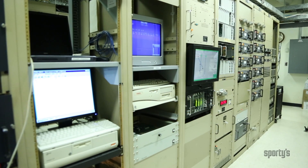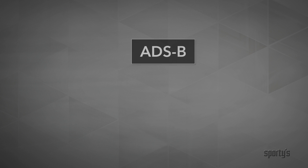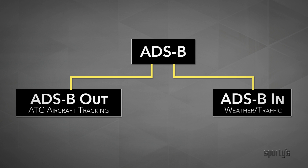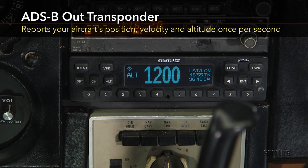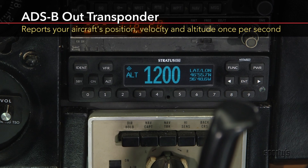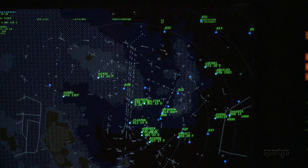Now that we know what ADS-B is, let's look at how it works. ADS-B is made up of two main parts: ADS-B Out and ADS-B In. ADS-B Out is a surveillance technology for tracking aircraft — it's what ATC needs to manage aircraft. An ADS-B Out transmitter reports your aircraft's position, velocity, and altitude once per second. This transmission, received by ATC and also by nearby aircraft, makes up the equivalent of a radar display.